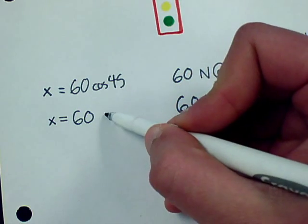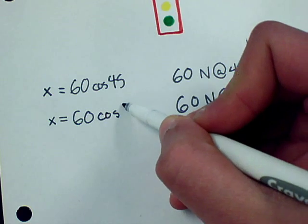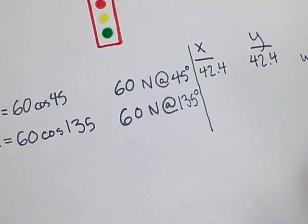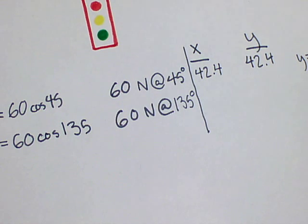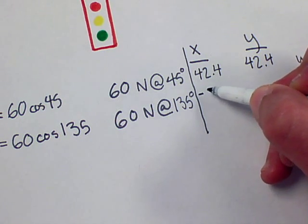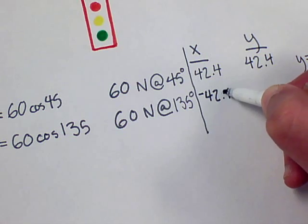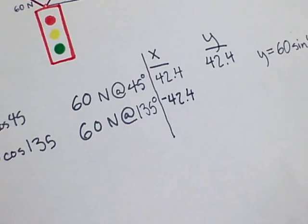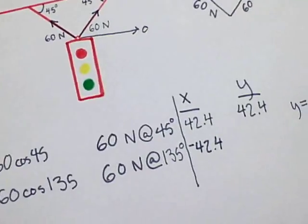Alright, and then we will repeat the process for the second vector, in which case it would be x equals 60 cosine 135. And that will give us negative 42.4. Correct.